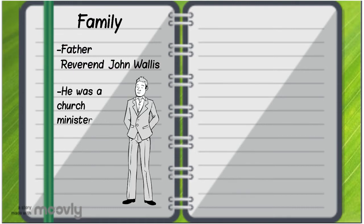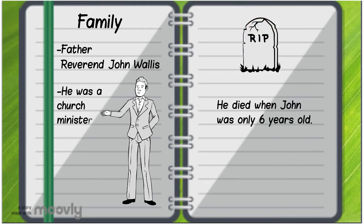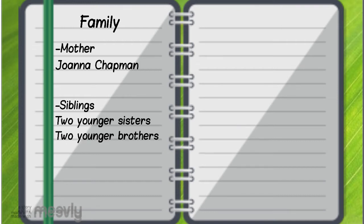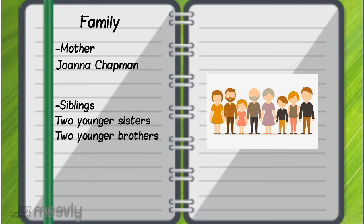His father's name was Reverend John Wallis. He was a church minister. He died when John was only six years old. His mother was Joanna Chapman. He had two younger sisters and two younger brothers.